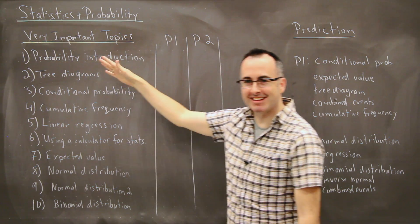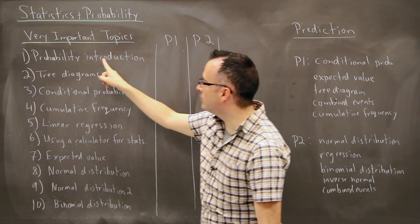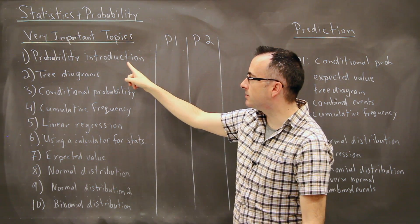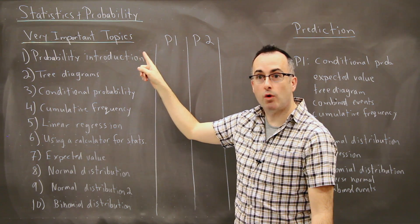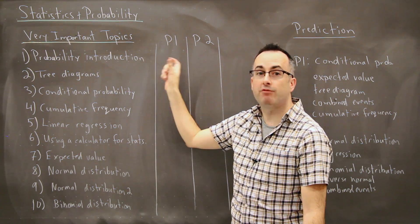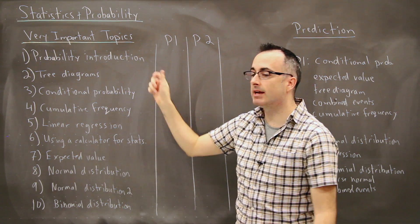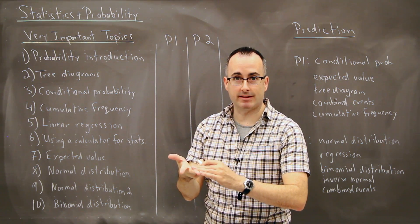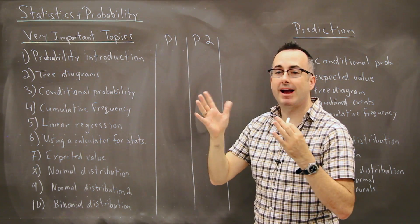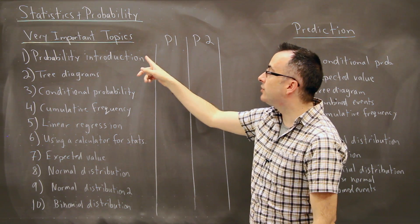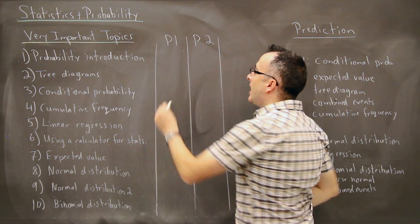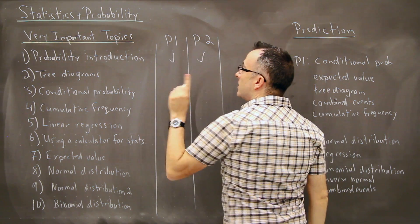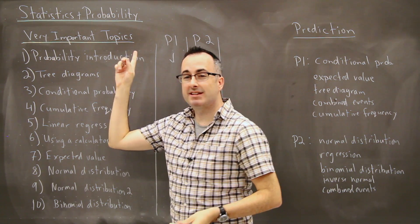All right, so if we look at this, the very first one here, the probability introduction. The reason I put this in here is because this covers a whole bunch of things from your formula booklet. This covers things like complementary events, mutually exclusive, independent events, this kind of thing. So these combined events, those show up there.